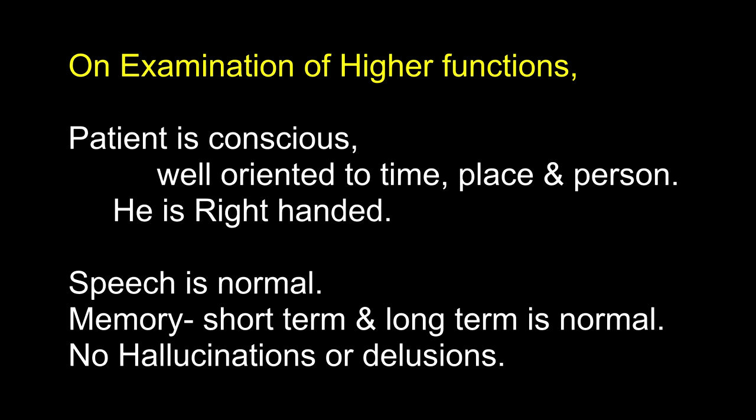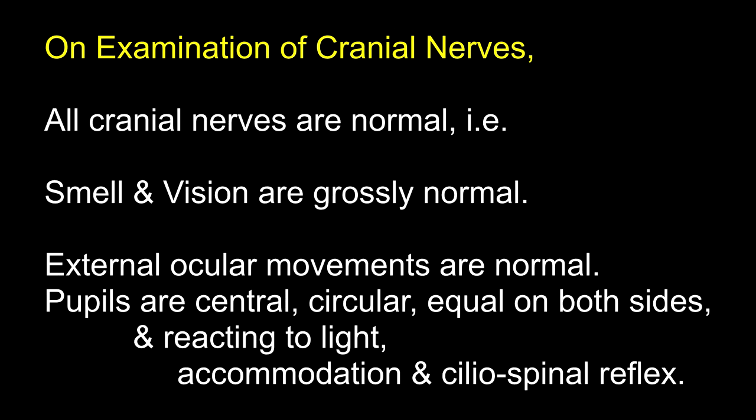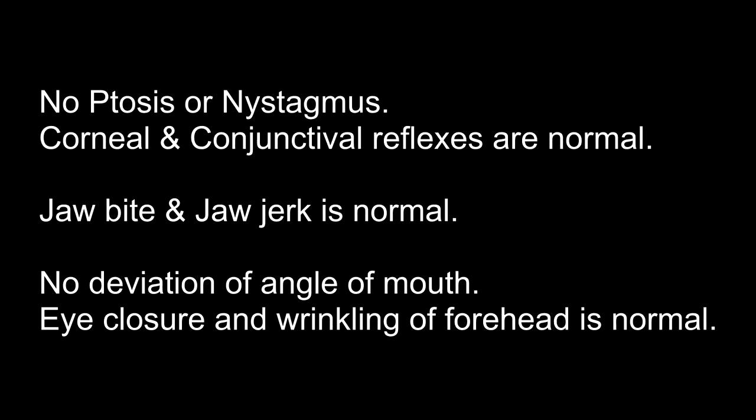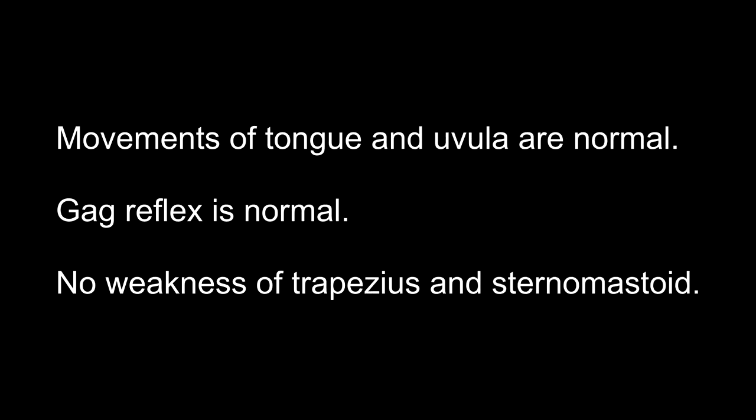On examination of the central nervous system: higher functions — the patient is conscious, well oriented in time, place and person, right-handed, speech is normal, short-term and long-term memory is normal, no hallucinations or delusions. On examination of the cranial nerves, all are normal: smell and vision normal, external ocular movements normal, pupils central, circular, equal on both sides, reacting to light, accommodation and ciliospinal reflex. No ptosis or nystagmus. Corneal and conjunctival reflexes normal. Jaw bite and jaw jerk normal, no deviation of the angle of mouth, eye closure and wrinkling of the forehead normal. Movements of the tongue and uvula are normal, gag reflex normal, and no weakness of the trapezius and sternomastoid.